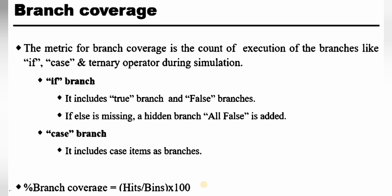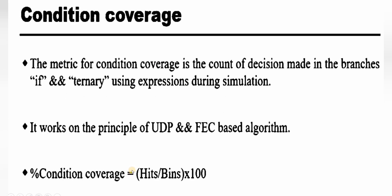Branch coverage is a metric counting the execution of branches during simulation. Branches include if, case, and ternary operators. For an if-branch, both the true branch and false branch must be covered — if either is missing, it is an uncovered branch. For case branches, case items are treated as branches. The formula for branch coverage is also (hits / bins) × 100.